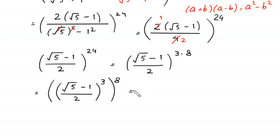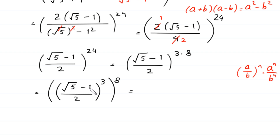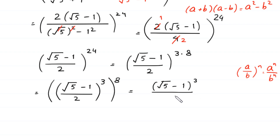Using the algebraic identity (a/b)^n = a^n / b^n, this power of 3 applies to both (square root of 5 minus 1) and 2. So we get (square root of 5 minus 1) cubed, divided by 2 cubed, whole to the power 8.